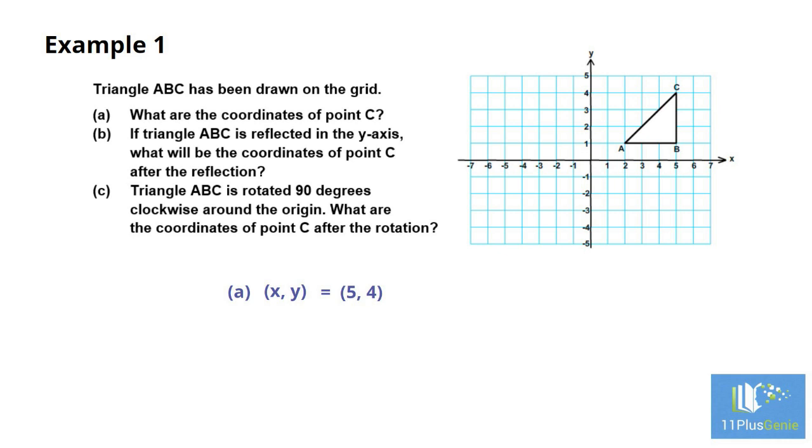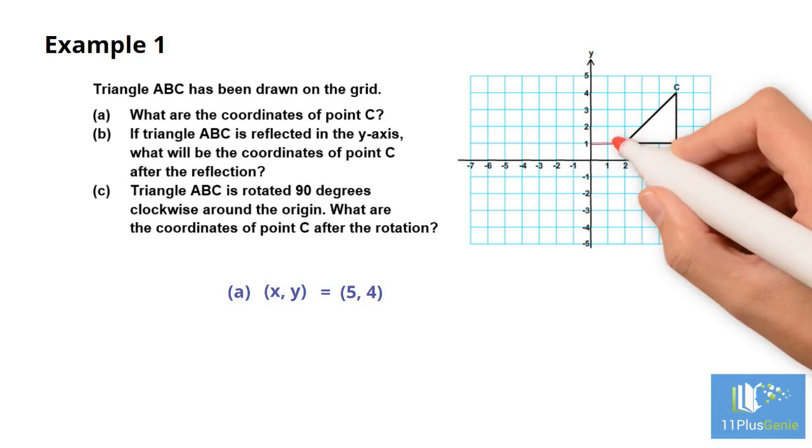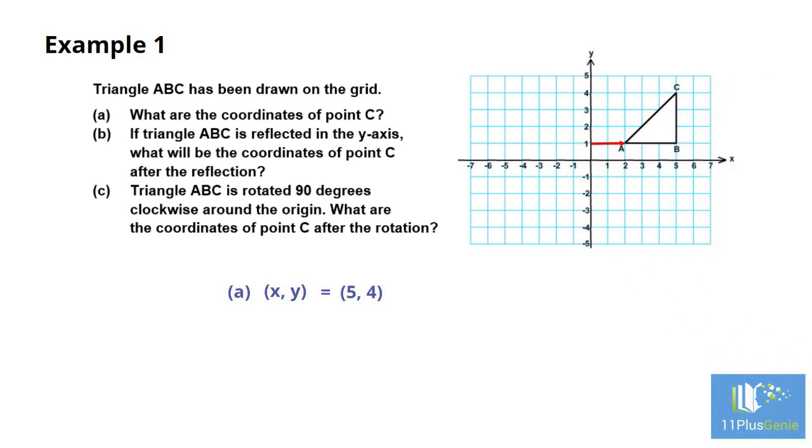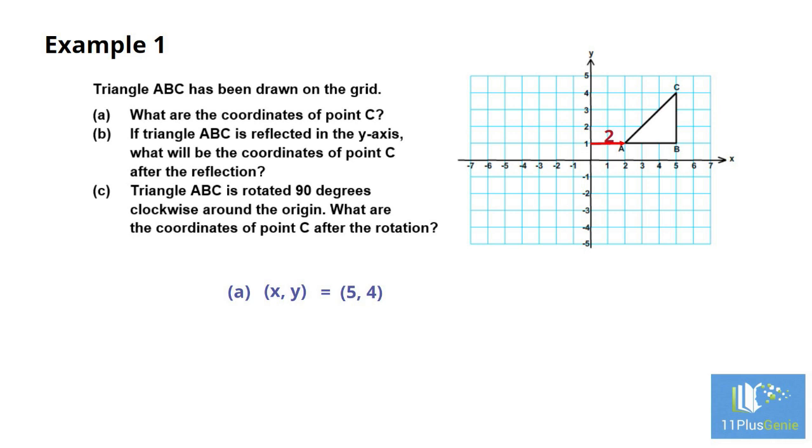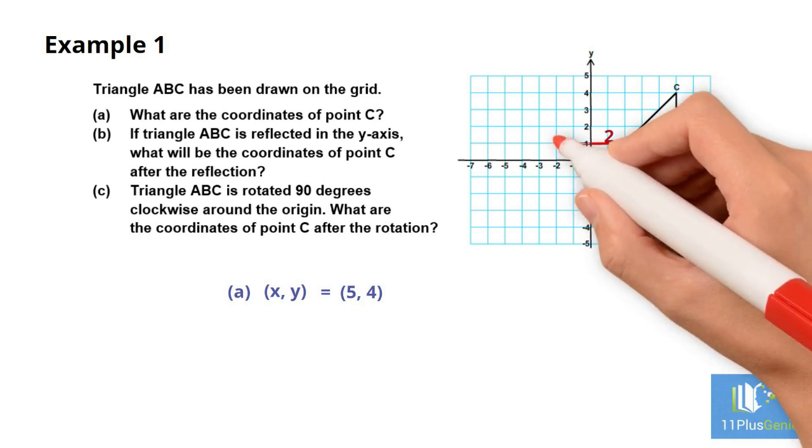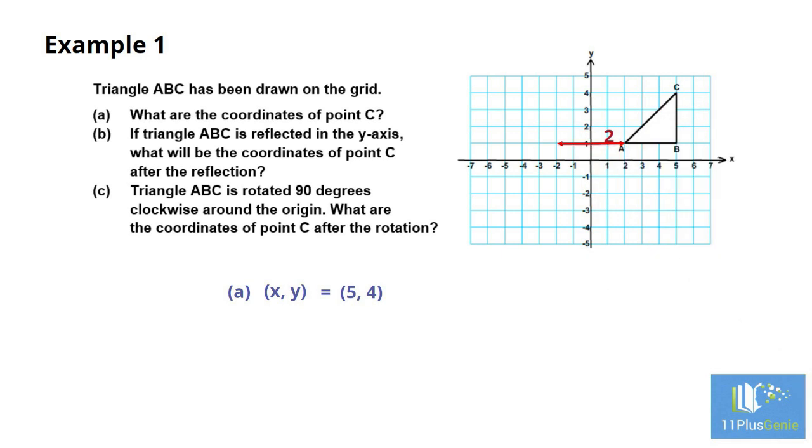Part B: If the shape is reflected in the Y-axis, the distance of each of the points from the Y-axis to the shape must be the same as the distance from the Y-axis to the same point of the reflected shape. Point A is, for example, 2 units to the right of the Y-axis. In the reflection, point A must be 2 units to the left of the Y-axis. Point C is 5 units to the right of the Y-axis, so point C must be 5 units to the left of the Y-axis after reflection. We can now draw the reflected triangle in the correct place. The coordinates of point C after the reflection are (-5, 4).